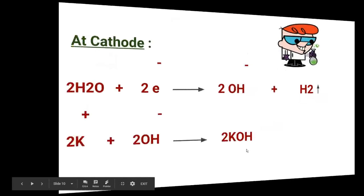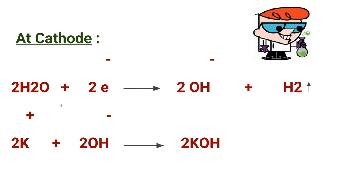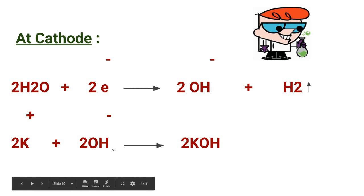At the cathode, positively charged ions migrate — water dissociates into positively charged hydrogen ions (protons) and hydroxide ions. Two protons take two electrons at the cathode and form hydrogen gas, which is liberated. The hydroxide ions remain in solution and combine with the potassium ions (also present in solution) to form potassium hydroxide.